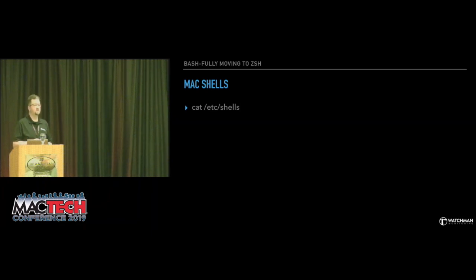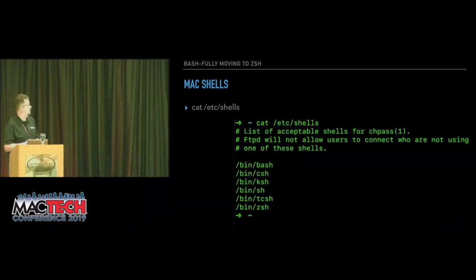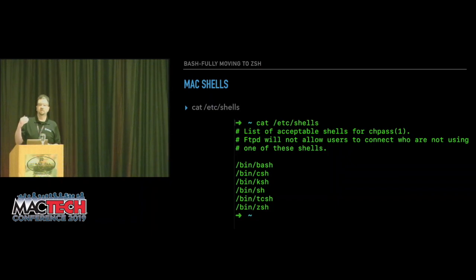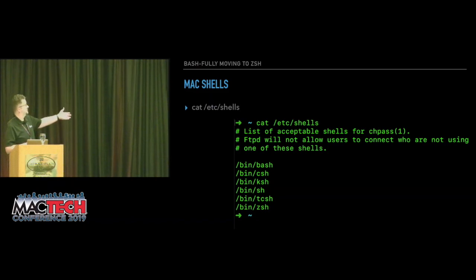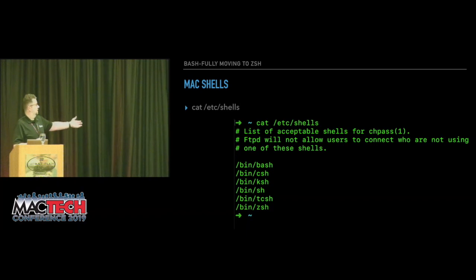If you want to see what shells are available on your system, it's a very simple command in Terminal: `cat /etc/shells`. When you do that you'll get a comment that these are the list of acceptable shells you can pass to `chpass`, which is the command you would use to actually set your shell. You'll see there's bash, C shell, K shell, the original Bourne shell, tc shell, and zsh.